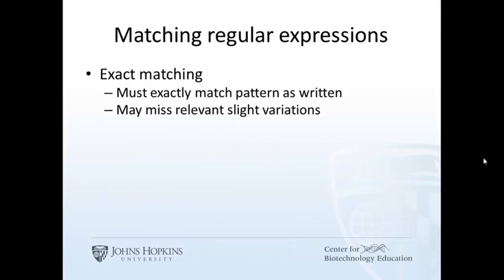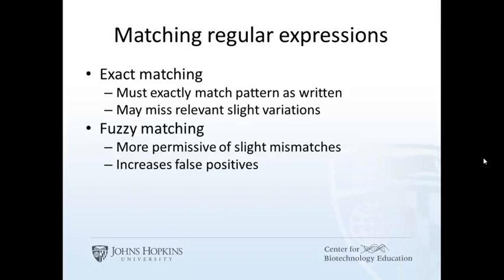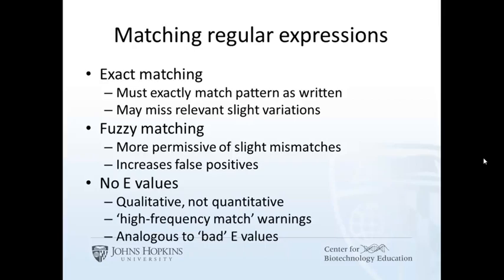If you use a sequence to search a database of patterns using exact matching, then every positive result should contain the pattern exactly as it is written. The fuzzy matching technique allows for slight deviation from a rigidly described pattern. Because it is more permissive, that increases the number of results and the chance of false positives — it makes it easier to match a pattern by random chance. Again, patterns are qualitative, and since E values are quantitative, you get no E values from patterns. However, short patterns that are easy to match by chance often contain warnings that the matched pattern is a frequently matched pattern — it's like a bad E value. Don't assume that it's a false positive. Almost all proteins match some kinase pattern. There are many short kinase patterns, and some of those matches do correspond to phosphorylated regions; others don't.